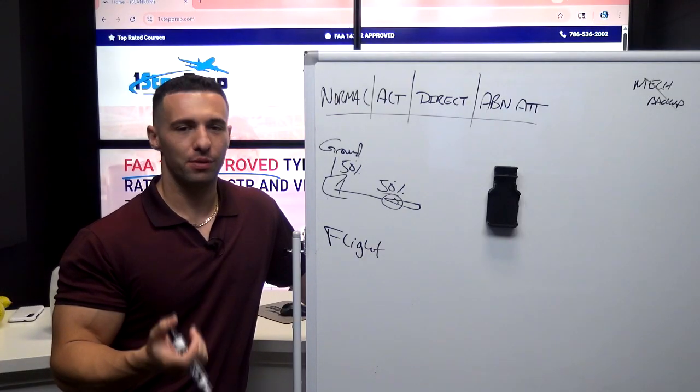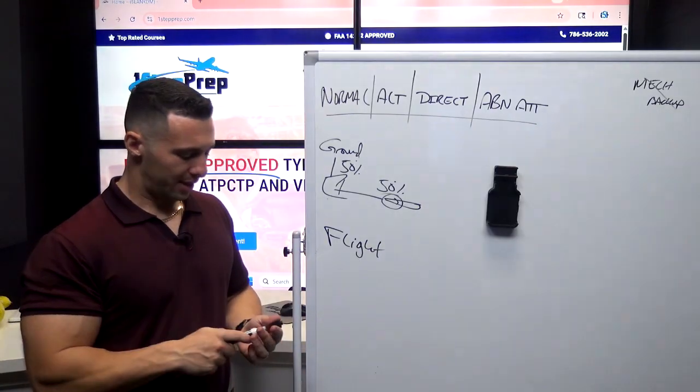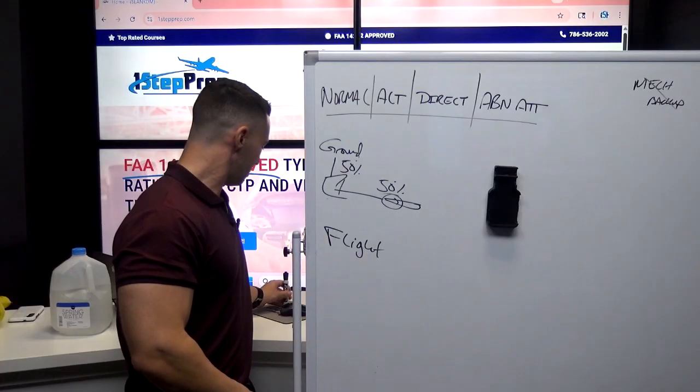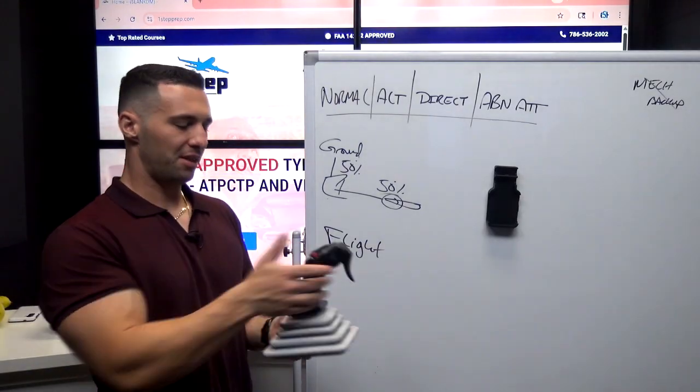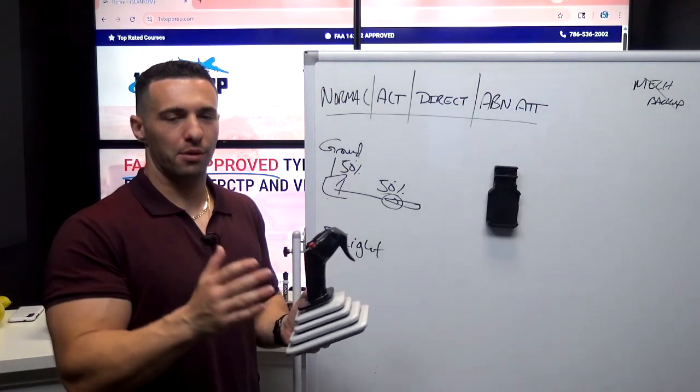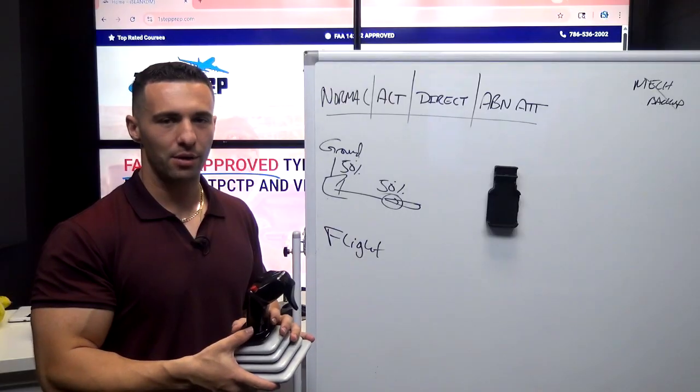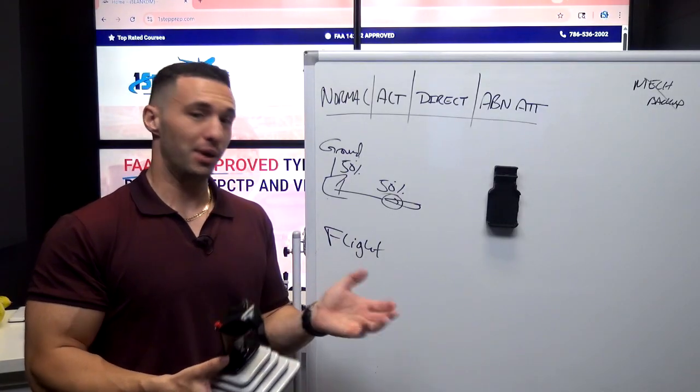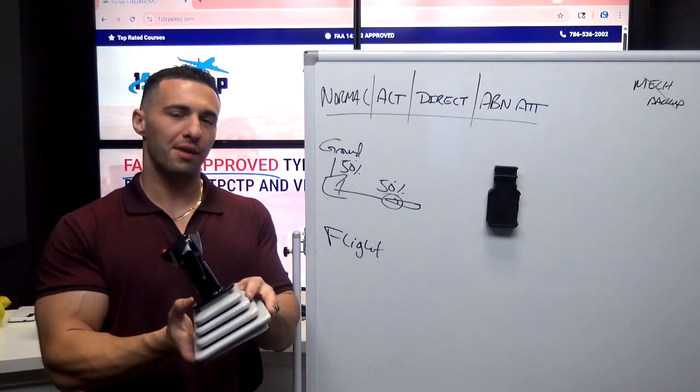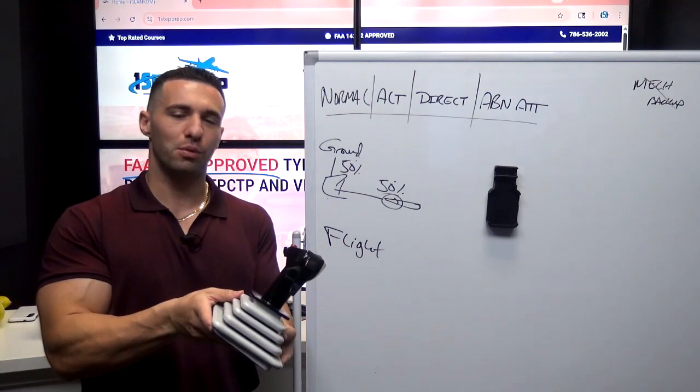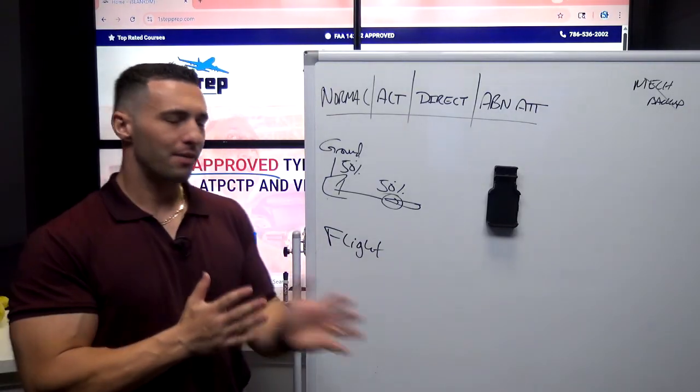So what that simply means is that if I, let's say I'm the pilot flying, I grab the side stick and I pull aft. And then the pilot monitoring for whatever reason grabs the side stick and pushes forward. We're basically canceling each other out. And so the sum of that input is zero and the jet will do nothing. It'll just continue flying straight and level. Same is true if one person goes full left or full right input and the other person goes full opposite input. The sum of both of those, of course, would be zero.